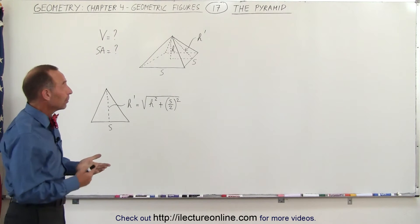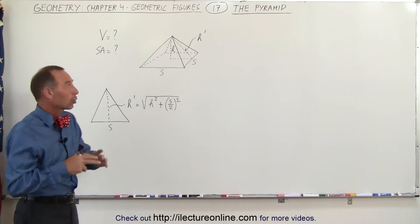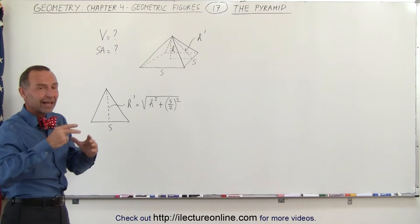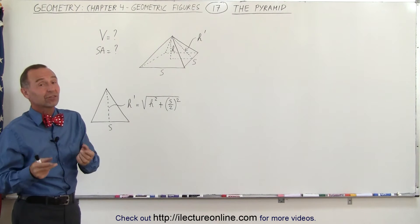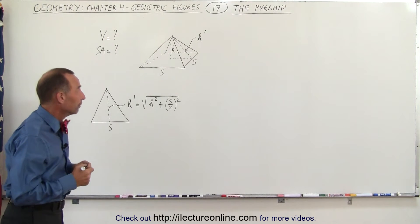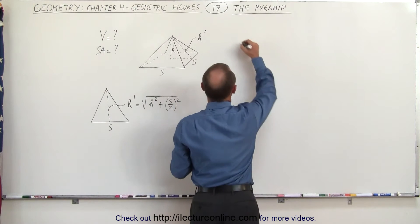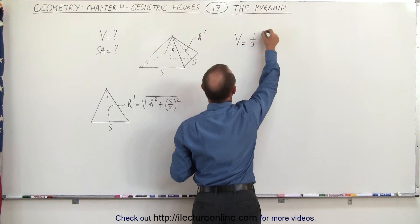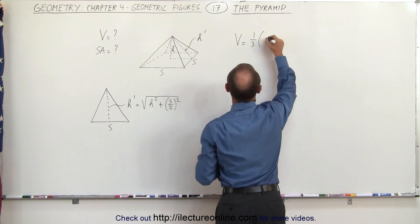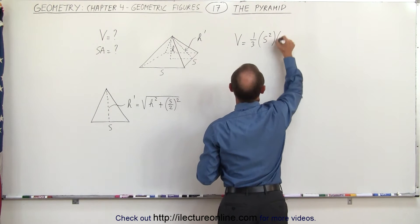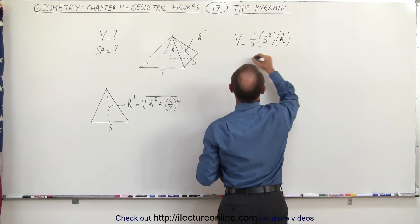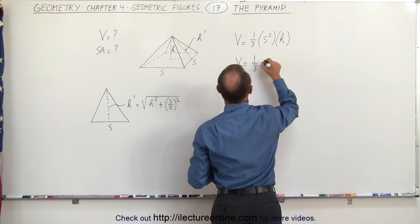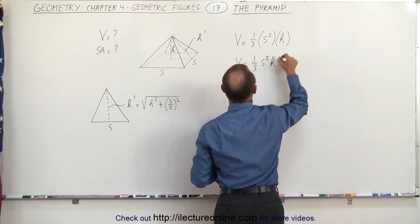The volume will be a lot like the right circular cone. It's the area of the base times the height times some fraction — and that fraction is one-third. So the volume equals one-third the area of the base, which in this case is s squared, times the height h. Simply said: V equals one-third s squared h.